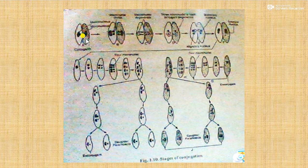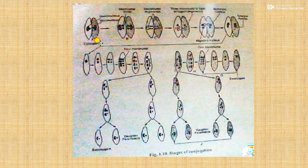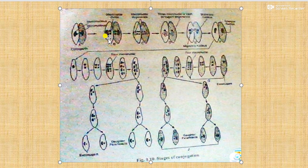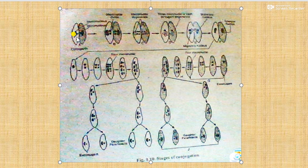These two individuals are now called conjugates. The macronucleus begins to disintegrate and breaks into fragments which are later absorbed into the cytoplasm.